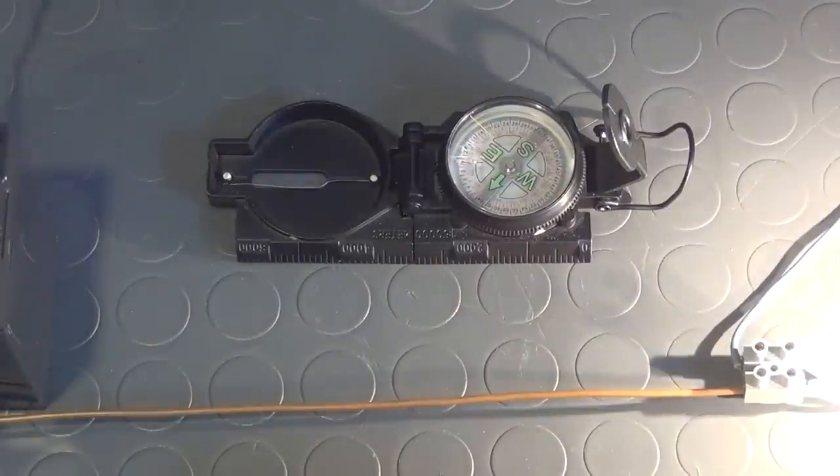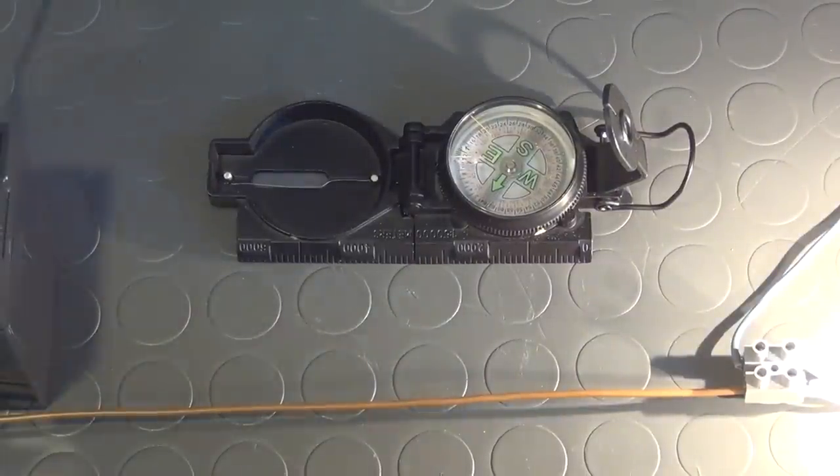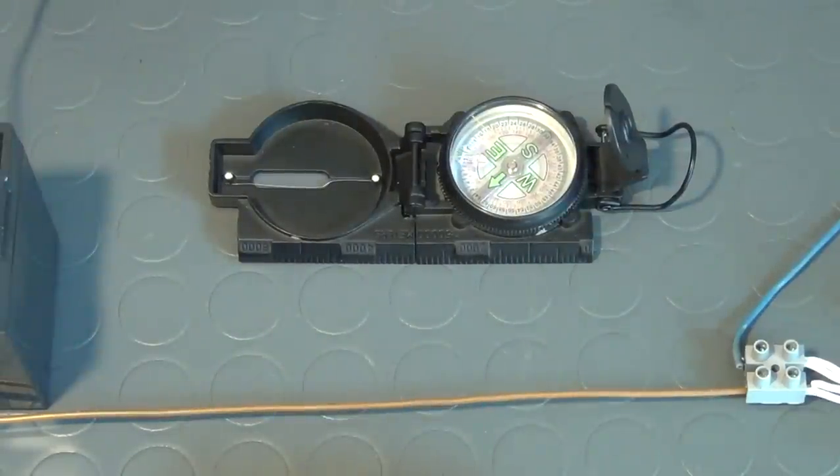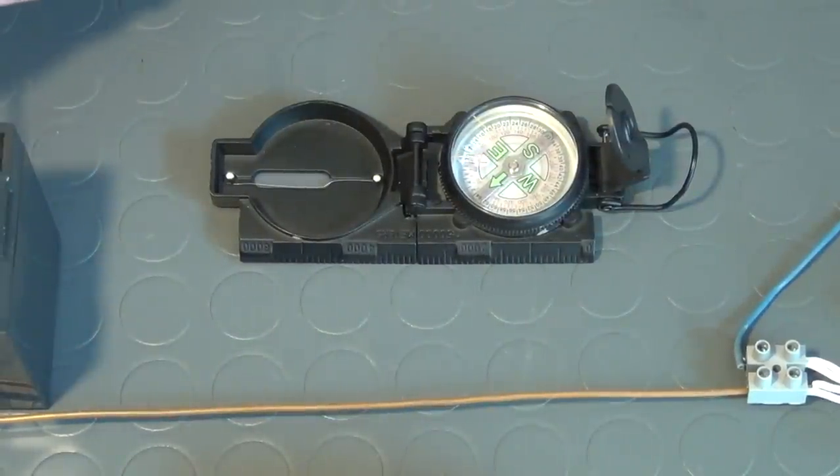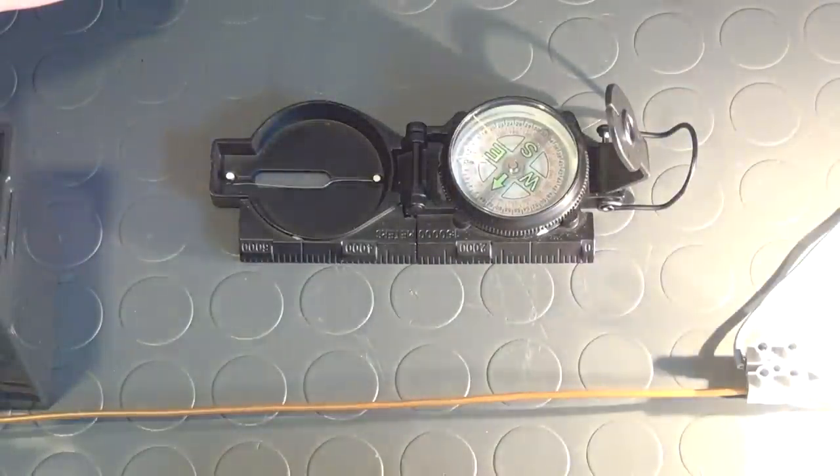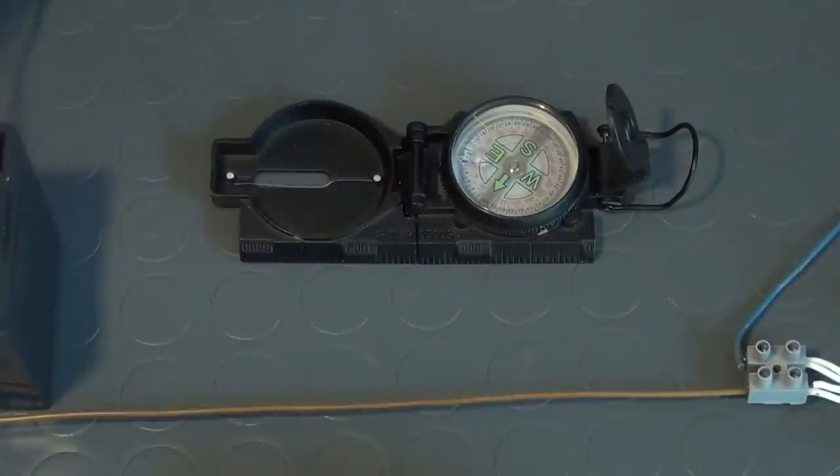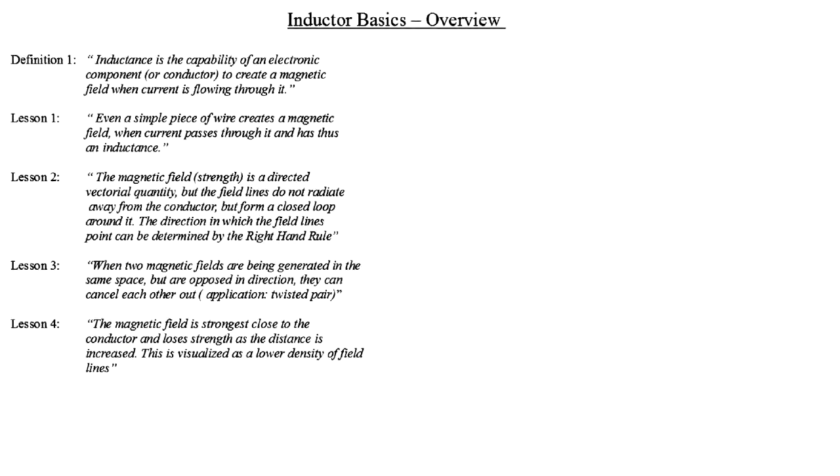Now I return to the two separated wires again, but this time I place the compass further away from the wire. As I now activate the switch, a rearrangement of the compass needle can be seen, but obviously the reaction is much weaker than before. Lesson 4 is then, the magnetic field is strongest close to the conductor and loses strength as the distance is increased. This is visualized as a lower density of field lines.